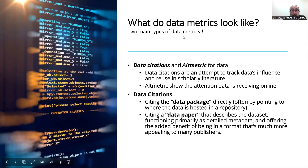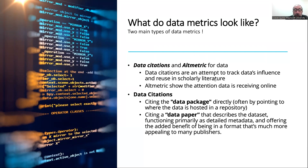So what do data metrics look like? There are two main types: data citations and altmetrics for data. Data citations attempt to track data that influences and appears in scholarly literature — that could be in your regular academic papers or in data papers. The altmetrics side, for example in Maynooth we use Altmetric Explorer, shows the attention it's receiving online: are people tweeting about it, is it in blogs, media, social media? The data citations themselves are either citing the data package directly, often by pointing to where the data is hosted in a repository, or they're citing a data paper that describes the dataset, which functions primarily as detailed metadata while offering the added benefit of being more appealing to many publishers.